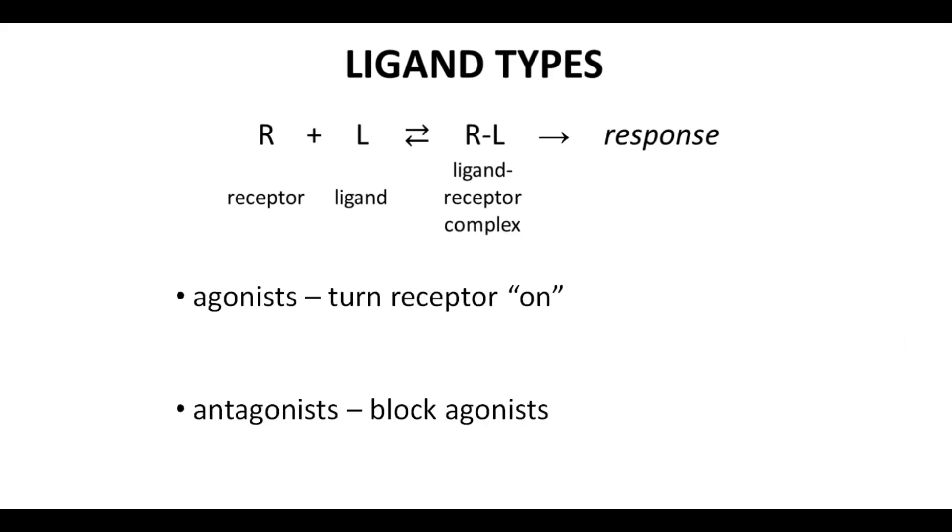Ligands that turn on a receptor are called agonists. There are different degrees of being turned on. Some agonists fully activate a receptor. These are full agonists. Ligands that do not fully activate a receptor are called partial agonists.